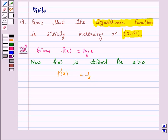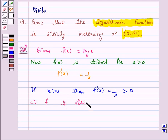If x is greater than 0, then f'(x), which equals 1/x, is also greater than 0. This implies f is strictly increasing on the open interval 0 to infinity.